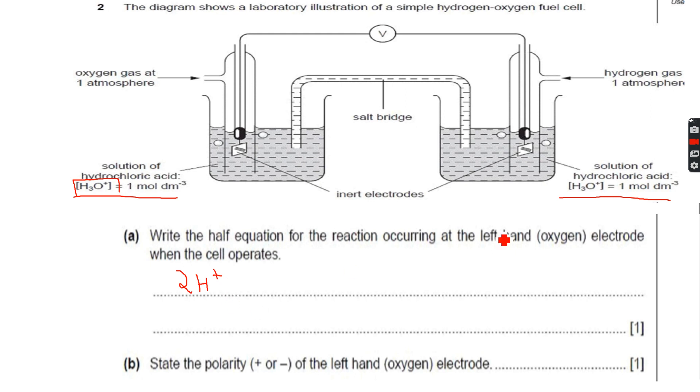We have to write it for the left hand electrode, sorry, only for the left hand electrode. So for the oxygen, when I look at the data booklet I get O₂ plus 4 H⁺ plus 4 electrons.